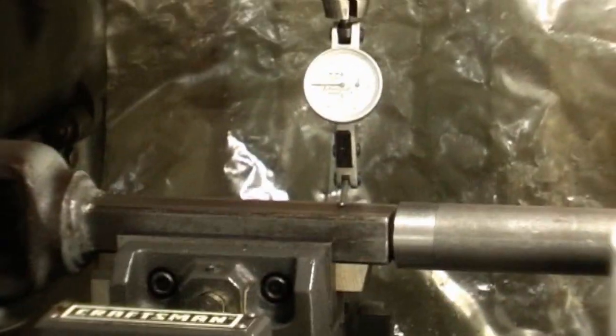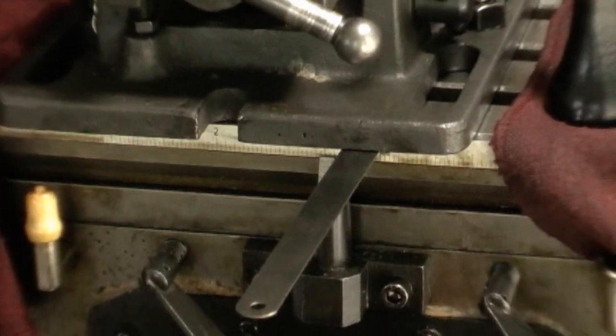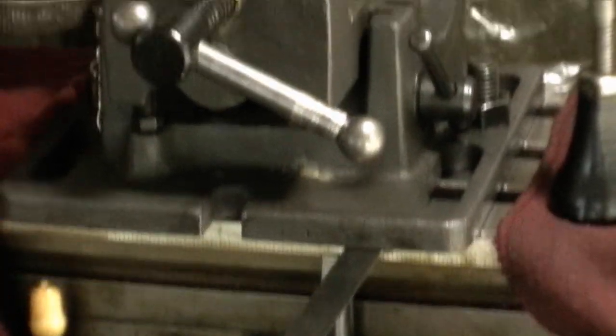So yeah, that's a half dial indicator and by the way that Craftsman vice is off by 22 thousandths. So that's what's under there, nice direct 22 grand.